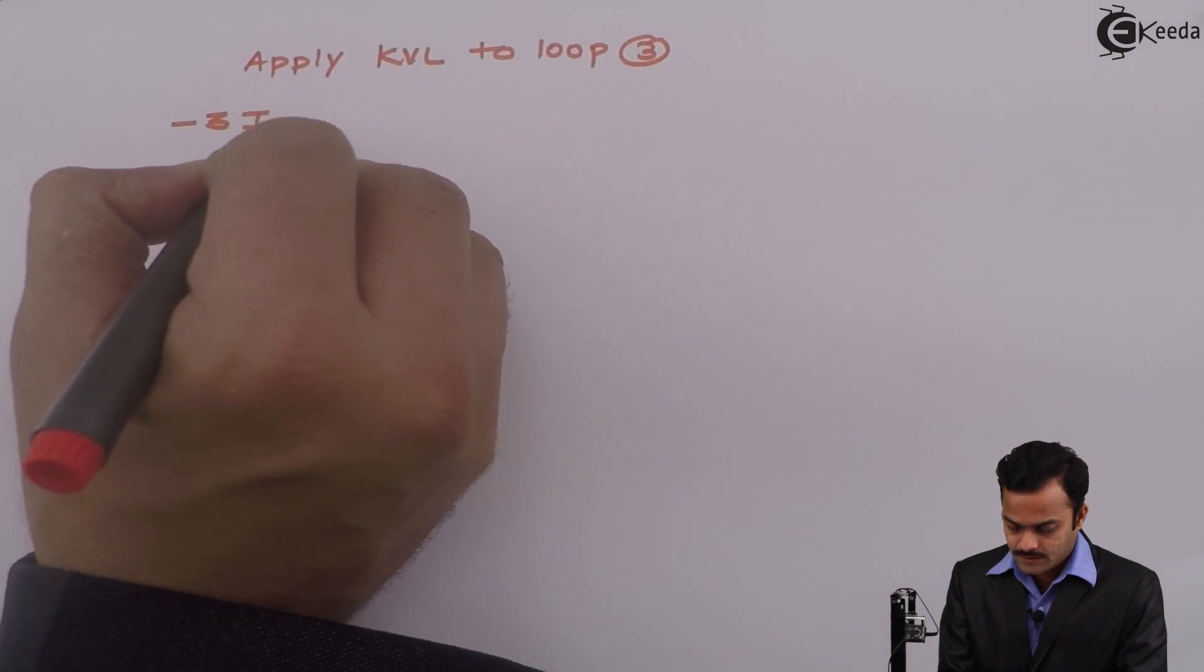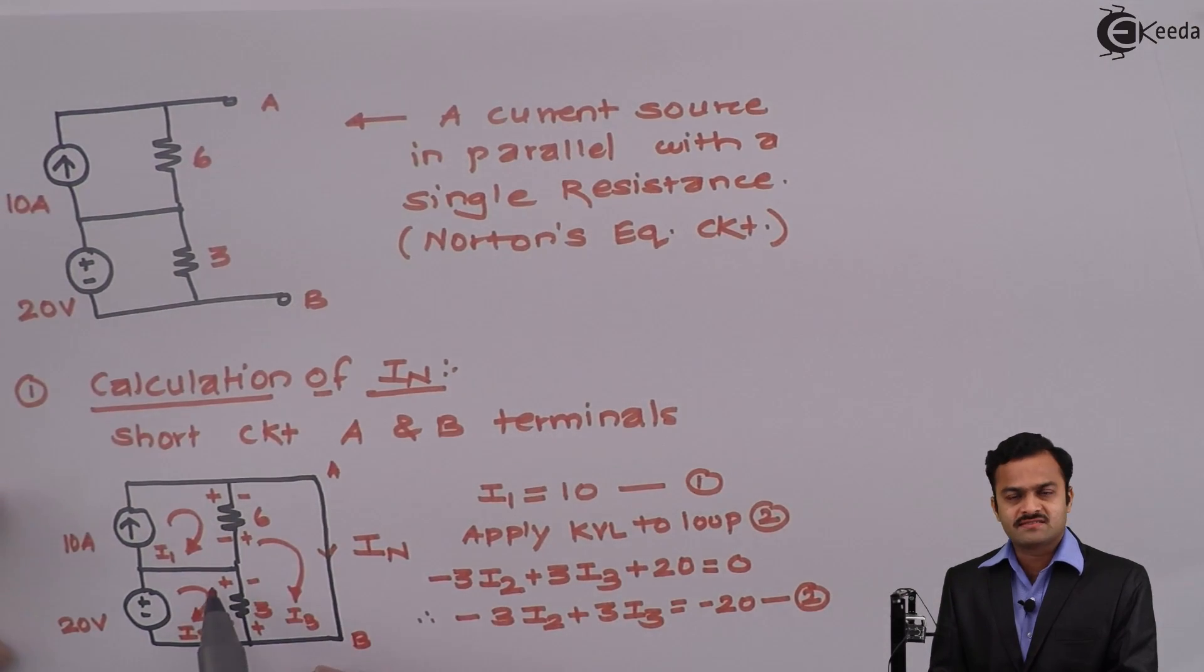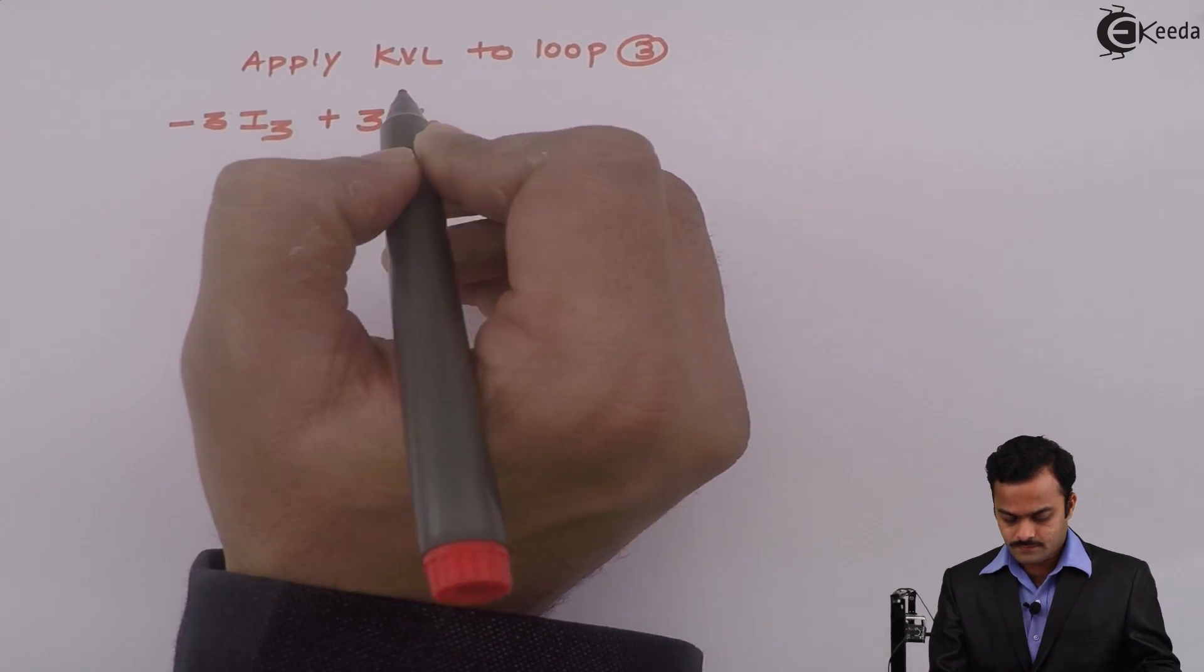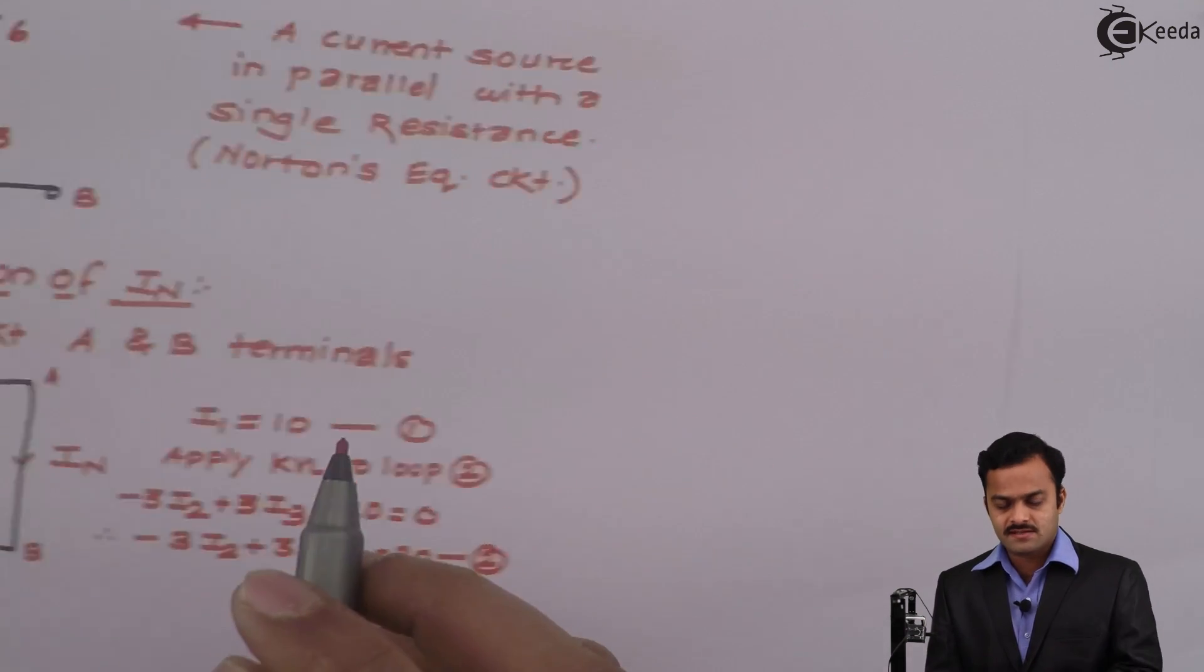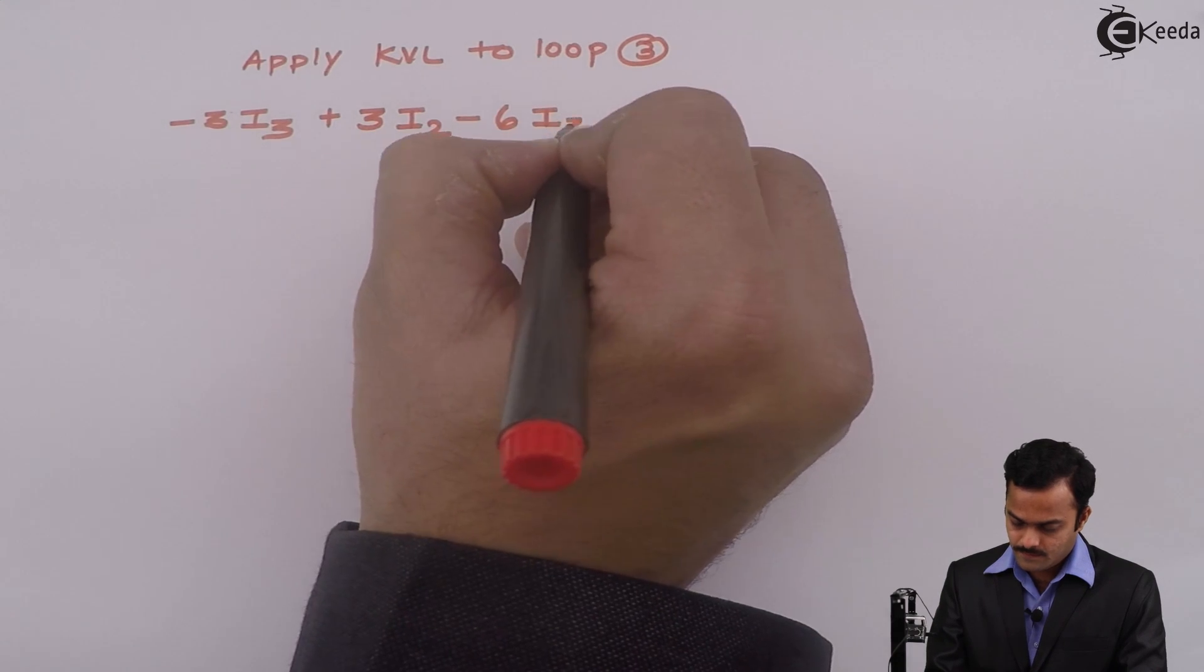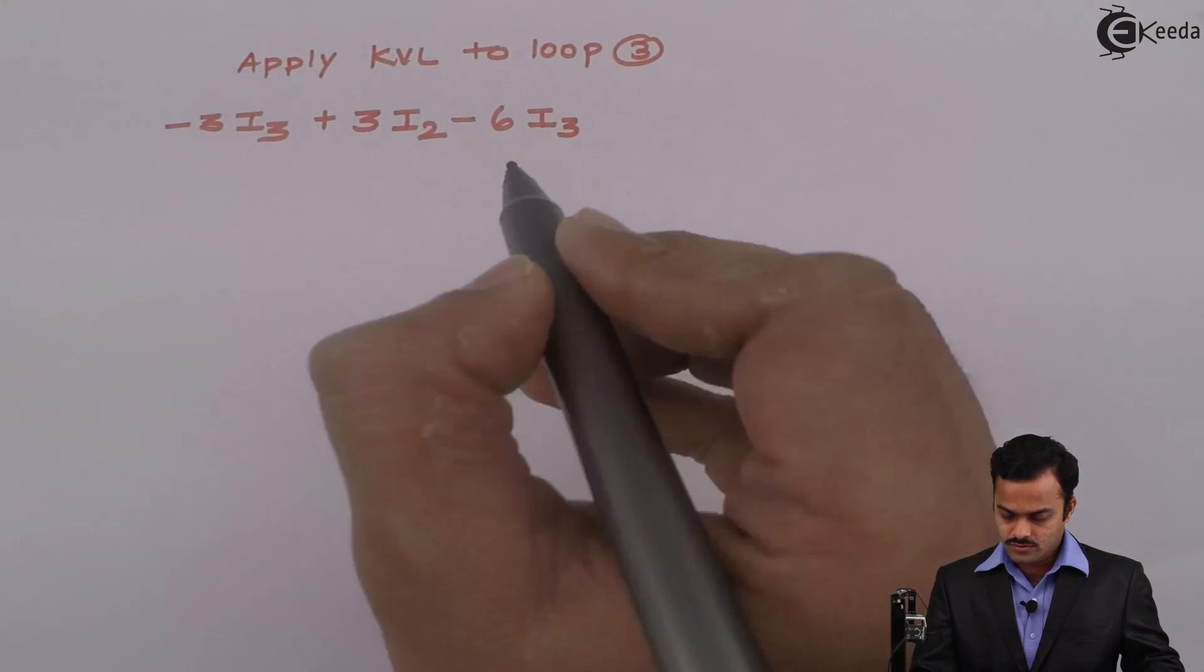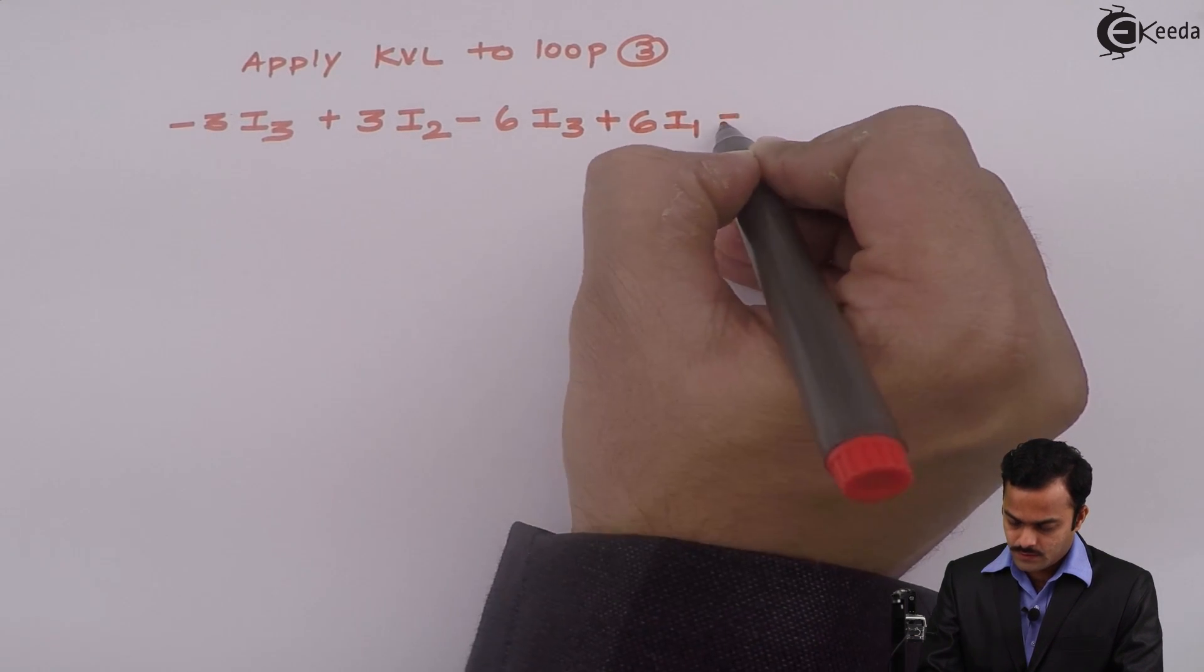The drop is plus minus, so which is minus 3 I3. And in the same direction I have one more drop that is minus plus, so it's plus 3 current is I2. For the 6 ohm in this direction, plus minus minus, minus 6 I3. And again one more drop minus plus because of I1, so it is plus 6 I1 equal to 0.